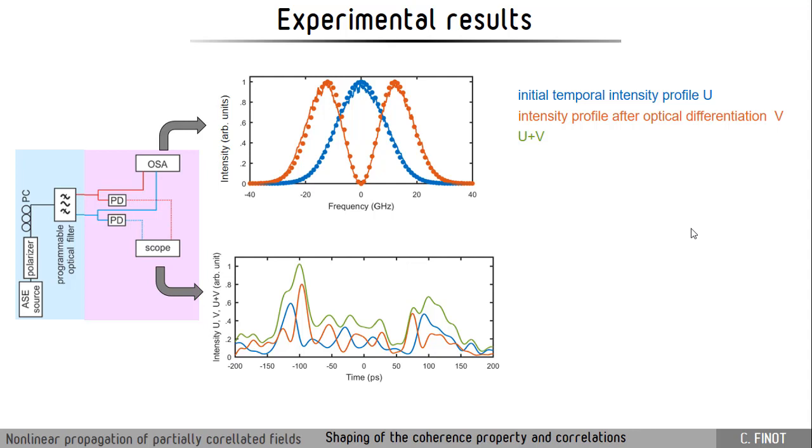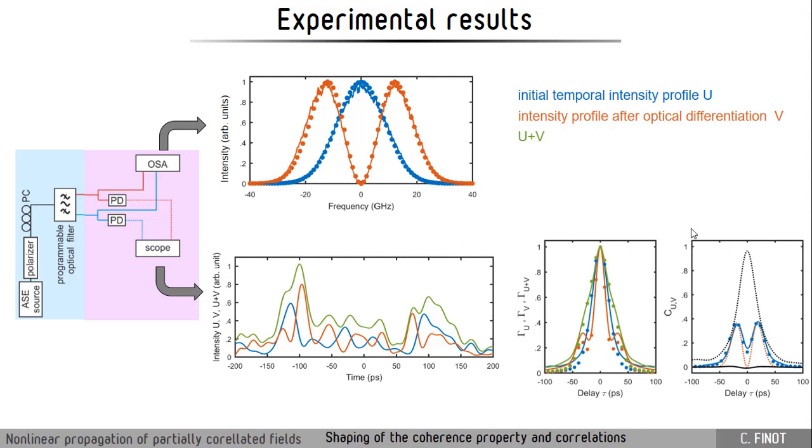In the temporal domain we can see that we retrieve the main property that I have previously presented. We have two complementary patterns, and when we sum those two patterns we have something that is broader. The autocorrelations are in good agreement with the prediction and this is also the case for the cross-correlation. However, to have perfect agreement we need to take into account the optoelectronic bandwidth - it limits our detection stage.